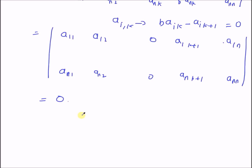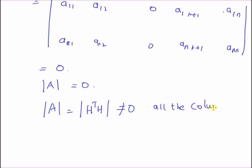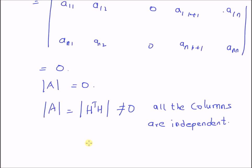Thus, when one column is a linear multiple of another, matrix A has determinant equal to zero. By proof by contradiction, we can say that the determinant of A = H^T H is not equal to zero only when all columns are independent. This is the necessary condition for H^T H to have an inverse, and thus the condition required for the existence of a minimum variance unbiased estimator for the unknown parameter vector theta bar. Thanks for watching.